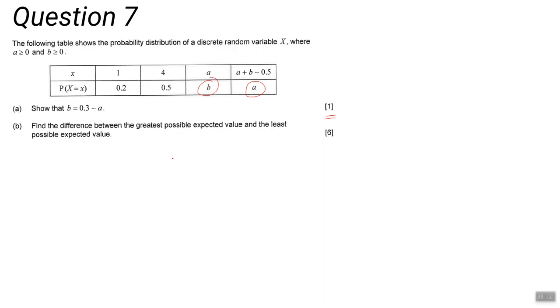Part B asks to find the difference in the greatest possible expected value and the least possible expected value. The starting point here is to work out the expected value, and you should know how to do that: each value multiplied by its associated probability. We can carry that on even when we have algebraic expressions.